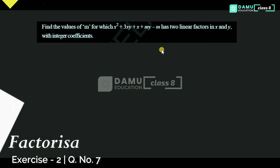In this module we are going to discuss: find the values of M for which x squared plus 3xy plus x plus my minus m has two linear factors in x and y with integer coefficients.